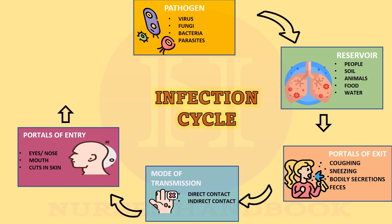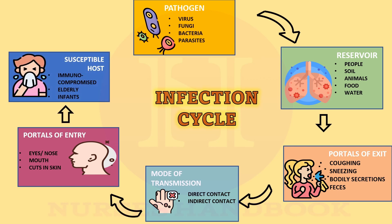Our last element is the susceptible host, which is the final link in the chain of infection. All organisms cannot cause disease or infect all human beings. Instead, infection occurs in those who have low immunity, like HIV patients, TB patients, the elderly, children, and pregnant women.